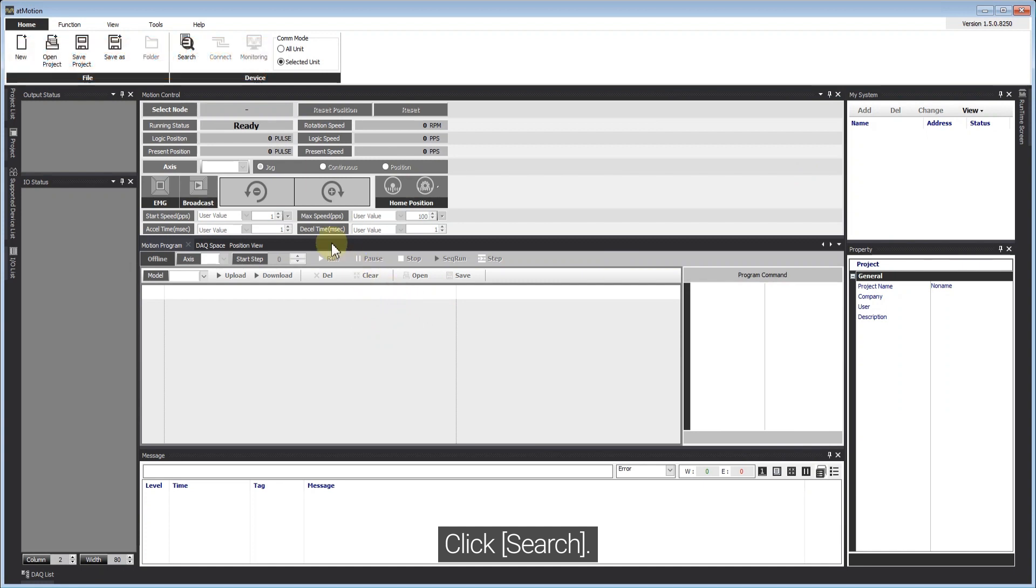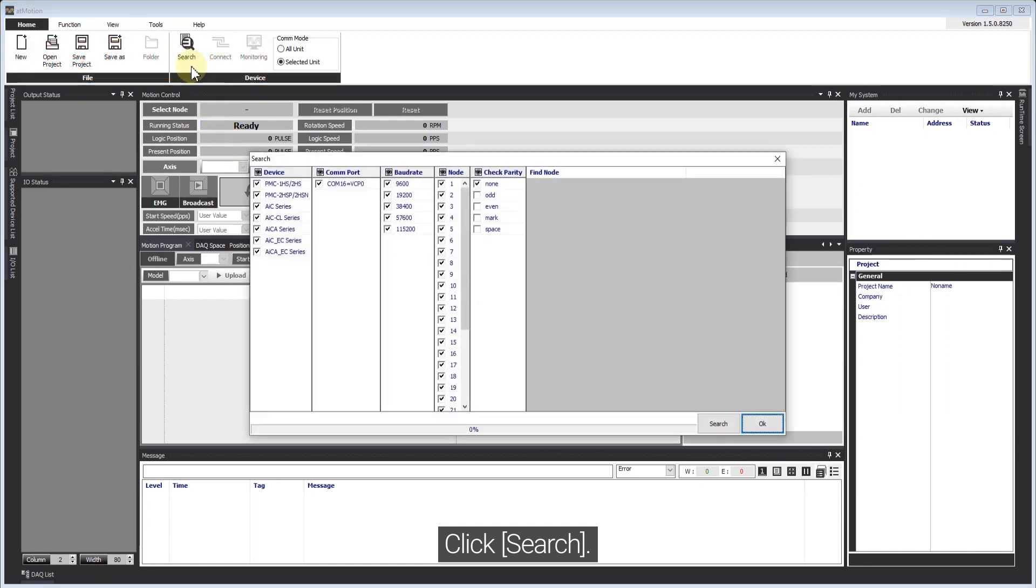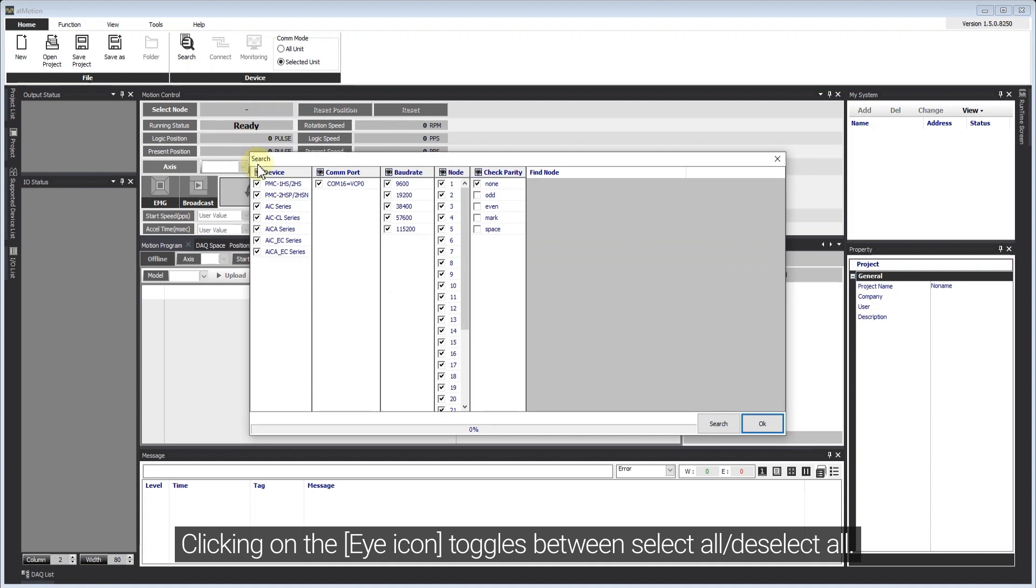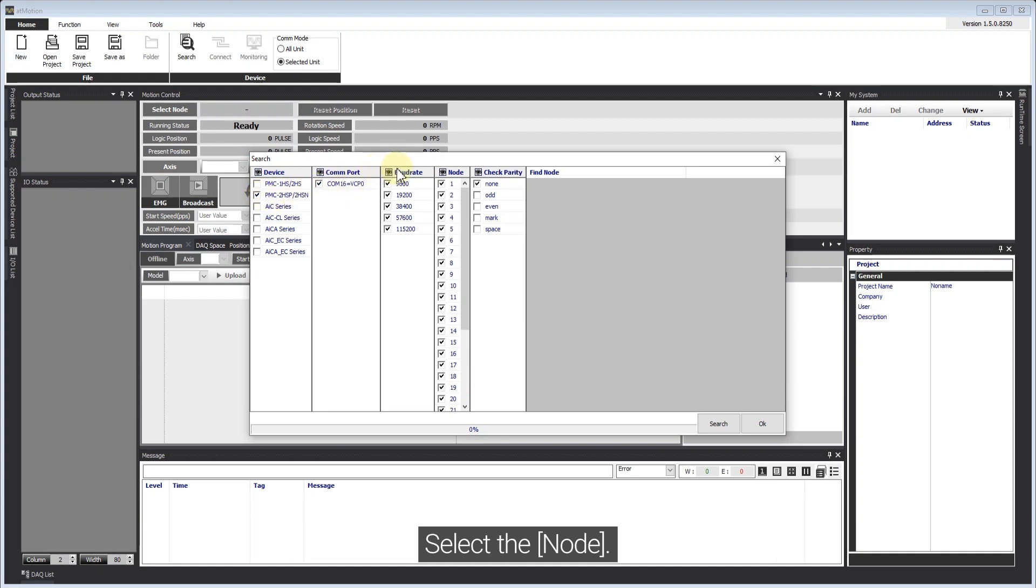Click Search. Clicking on the eye icon toggles between Select All to Select All. Select the device for connecting product series. Select the node.